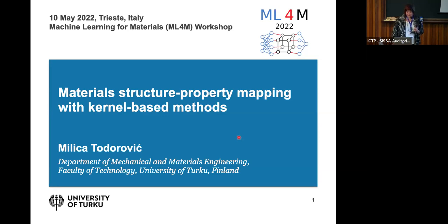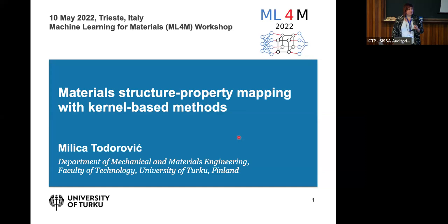Let's get going with the second tutorial. This is a direct follow-up on the lecture by Matthias Rupp yesterday, who introduced kernel methods — especially kernel regression and Gaussian process regression. Now we will cover the implementation in a very simple form, probably the simplest possible. I know some of you are already very experienced and this might be too basic, but we've tried to write down every single step and go through them.